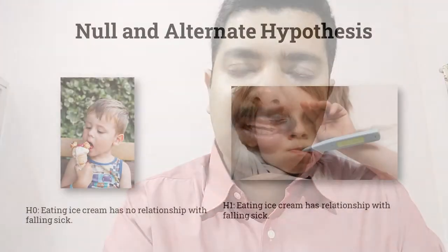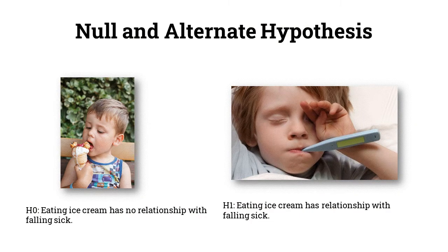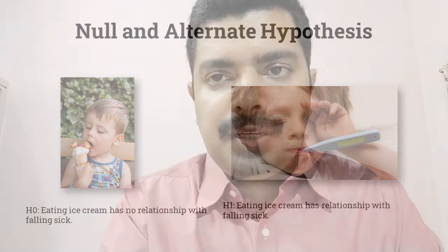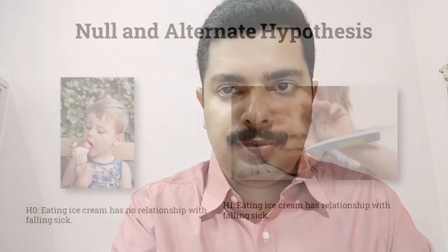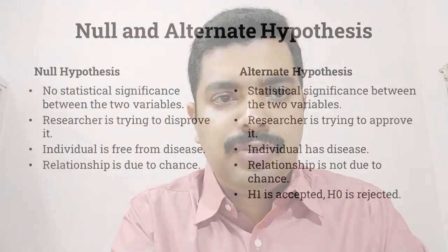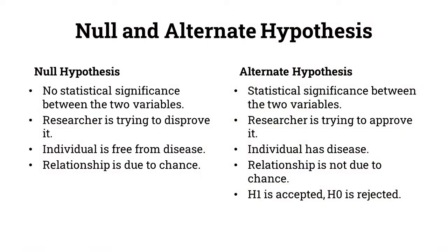Eating ice cream has no relationship with falling sick — that is one statement. The original statement was eating ice cream makes you fall sick. I'm negating it: eating ice cream has no relationship with falling sick. Whereas another statement is: eating ice cream has a relationship with falling sick. So I've made two statements — a positive and a negative one. Null hypothesis has no statistical significance, whereas alternate hypothesis has statistical significance between the two variables. Null hypothesis says there is no relationship or significance between the variables.